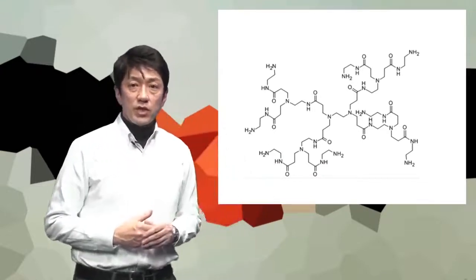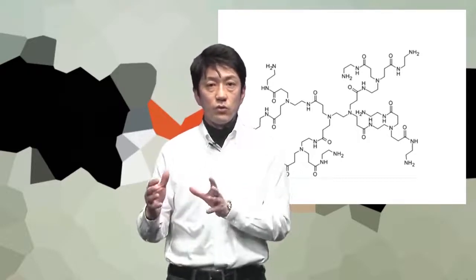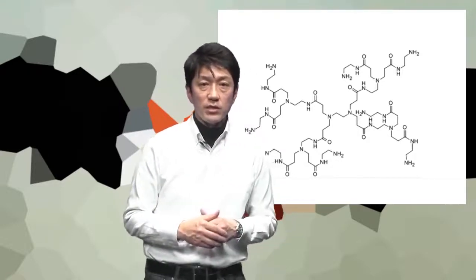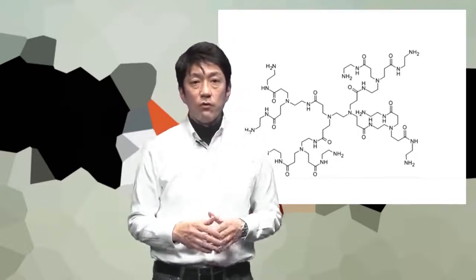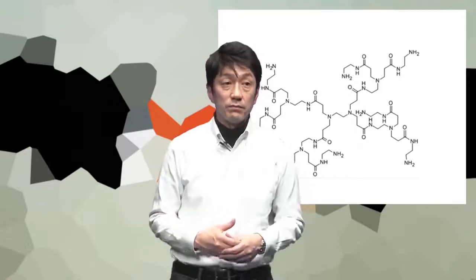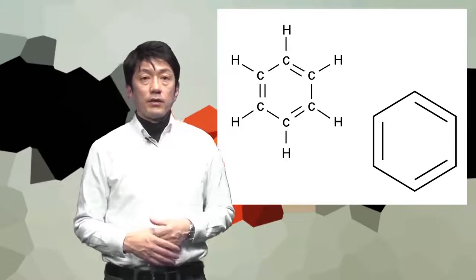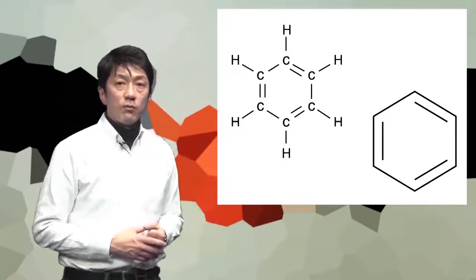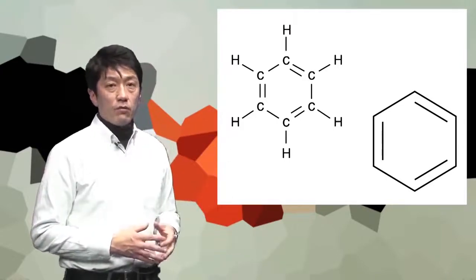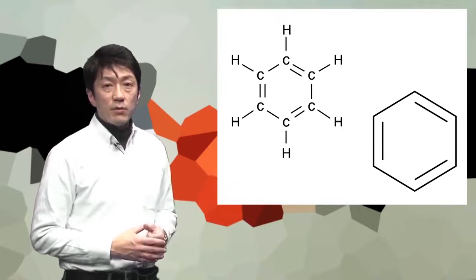Interestingly, some elements can use two or more hands to form compounds of greater diversity and structural complexity. For example, six carbon atoms and six hydrogen atoms can form a ring called a benzene ring. I'll show you the chemical structure right here. This ring structure is often stable and therefore quite important in describing biological events.